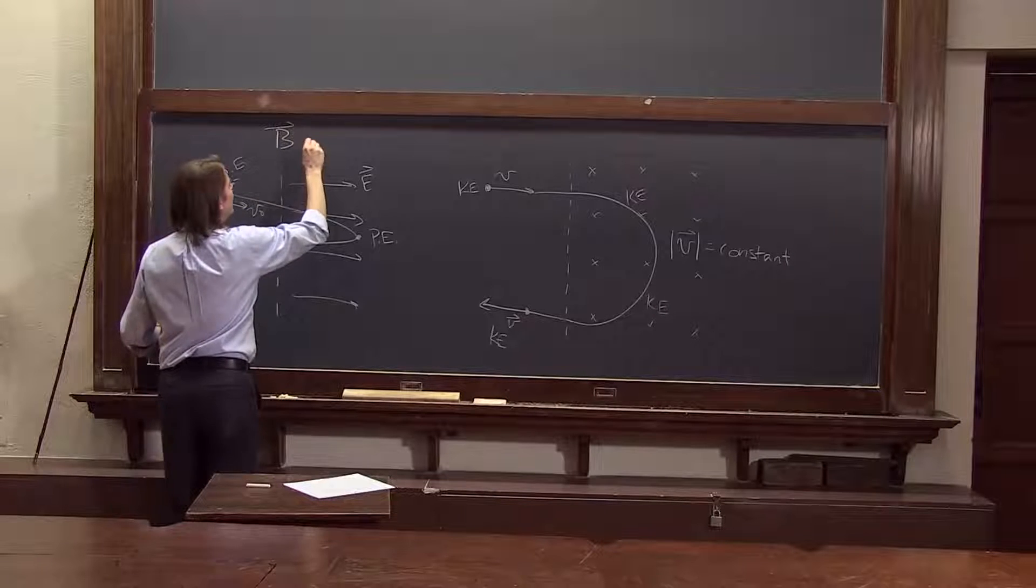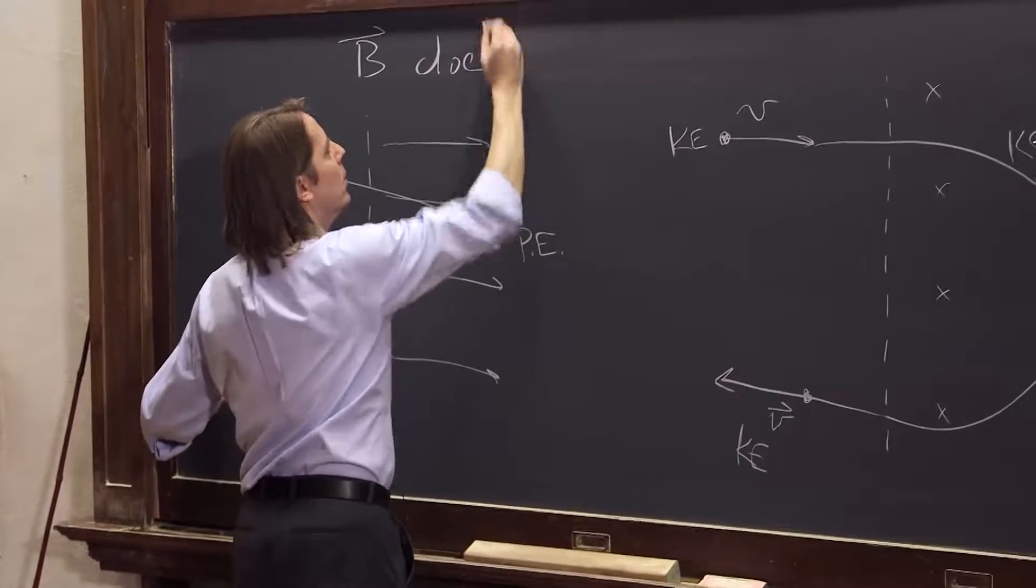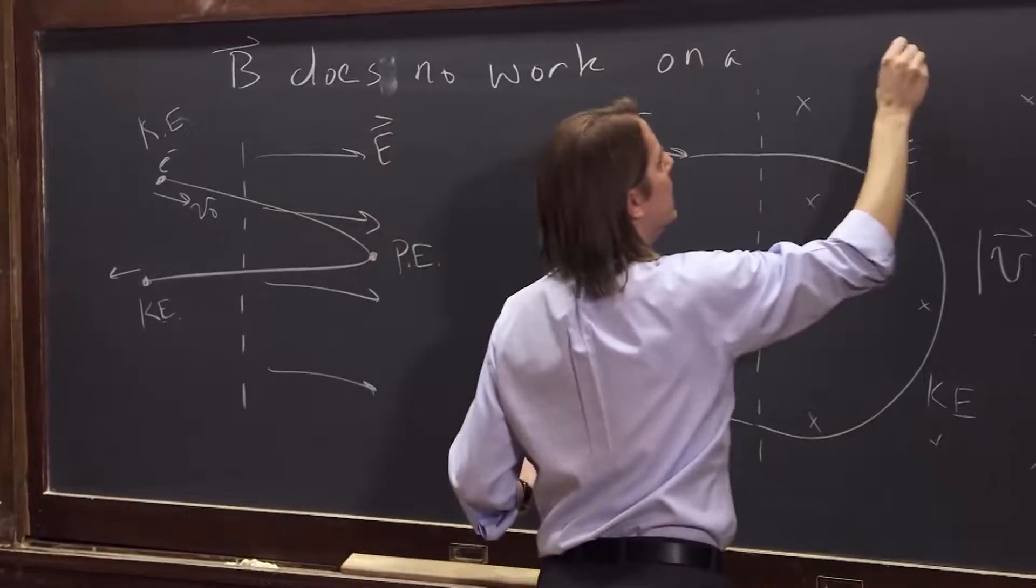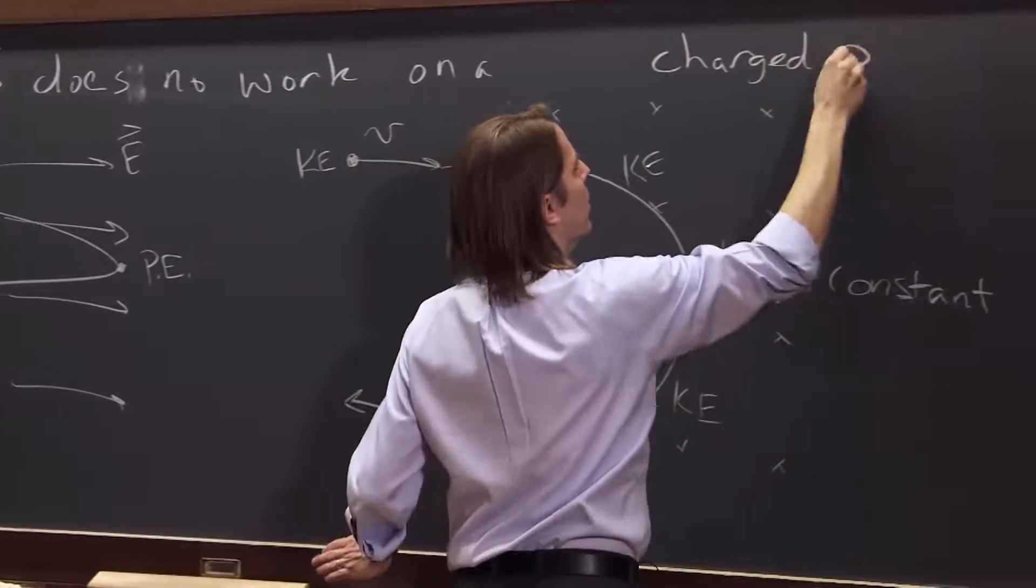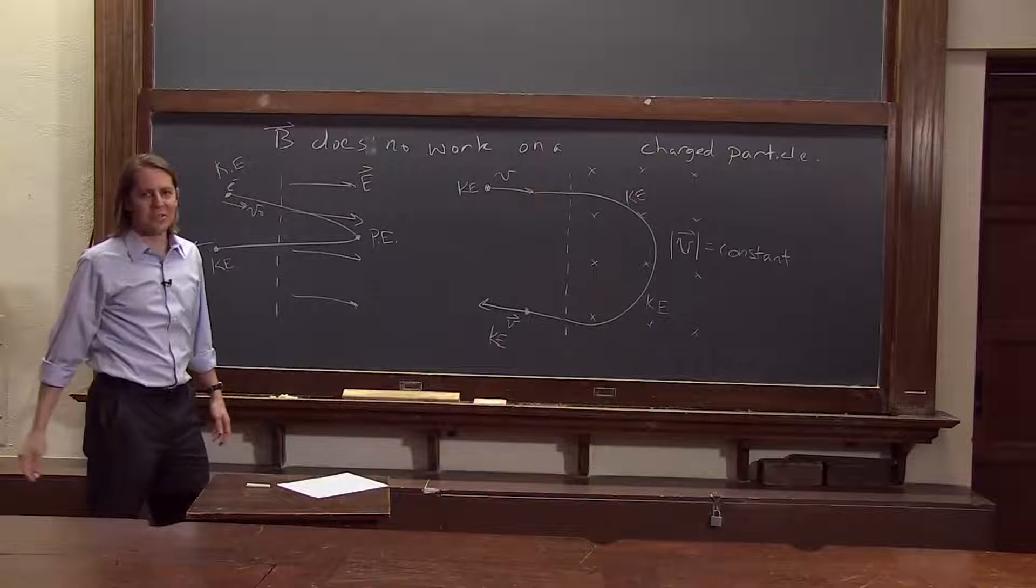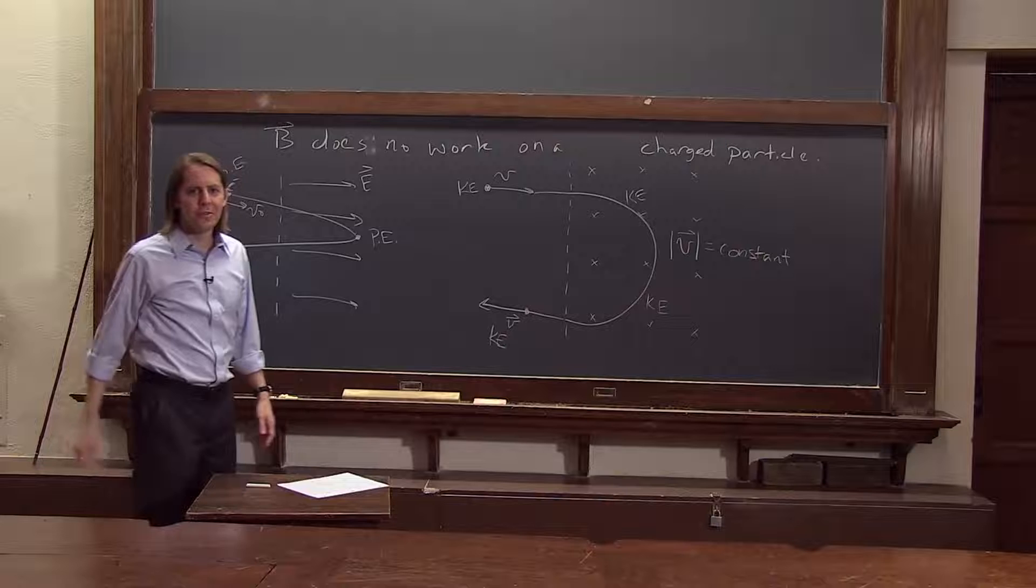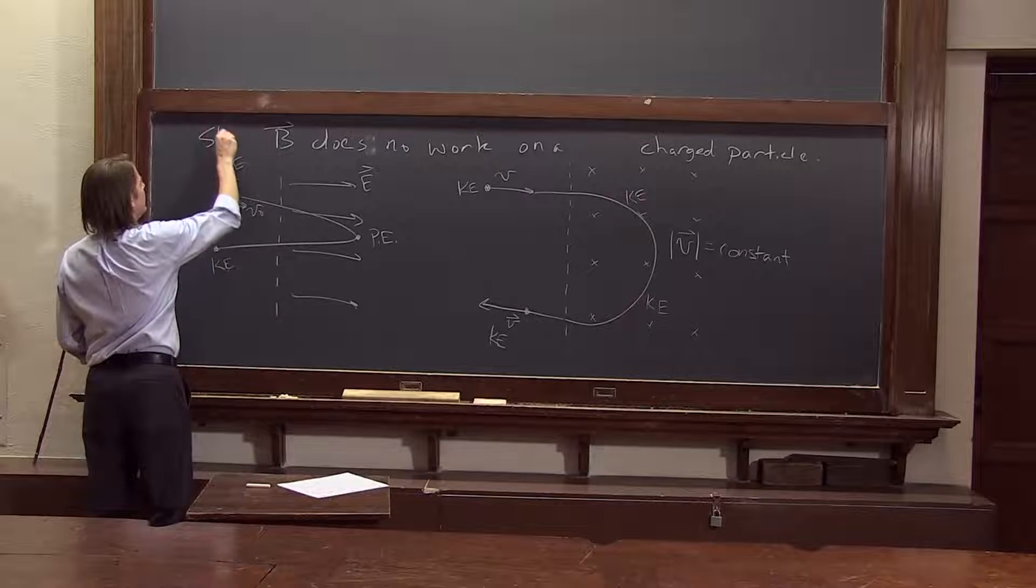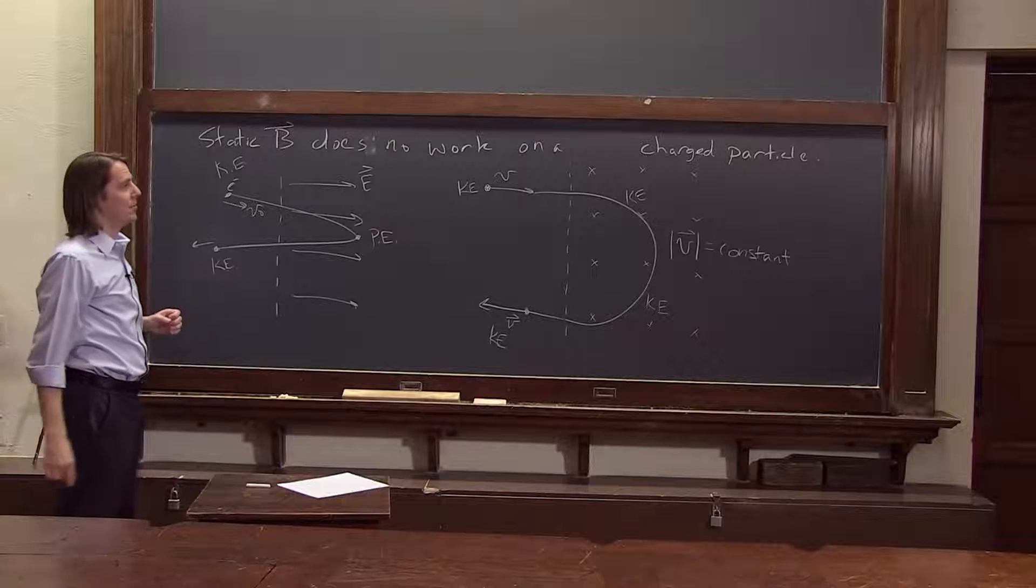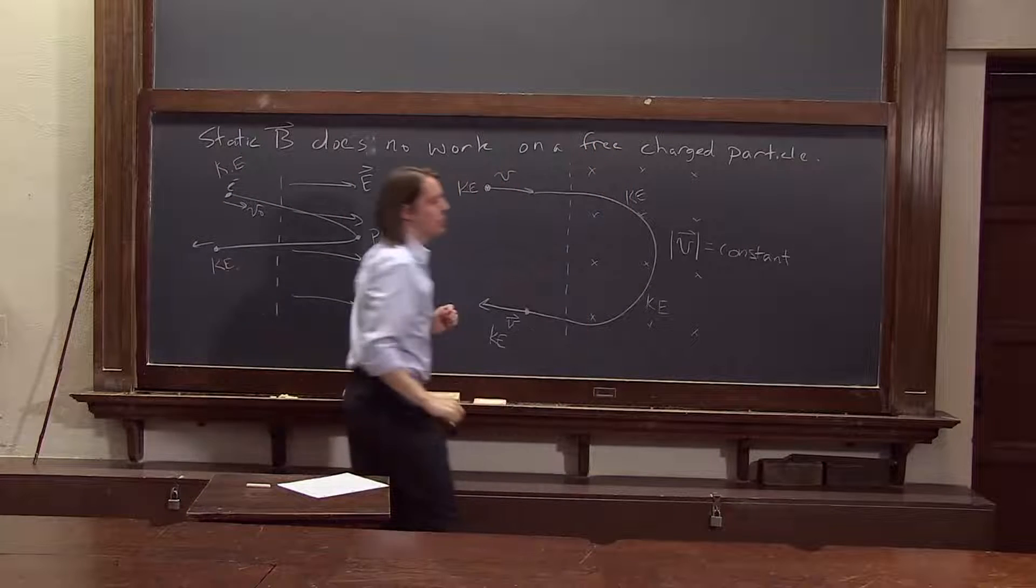So if we wanted to make a little rule, we could say that the B field does no work on a charged particle. Now, it's always risky to write things in physics because it's almost always proven untrue. So this is too general to be true. Let's fix it in two ways. A static B field. When a magnetic field changes, that's when you do work. We'll get to that later, to induction.